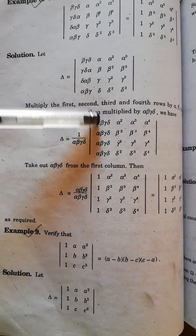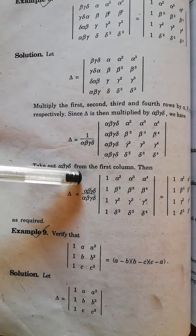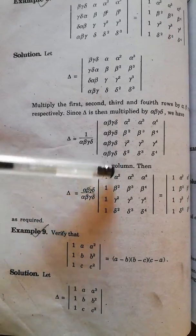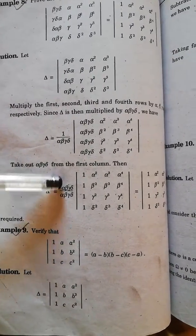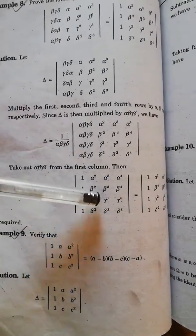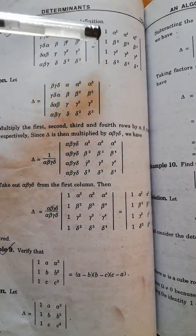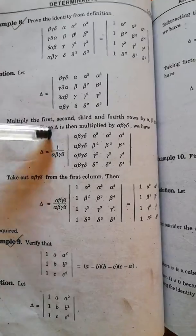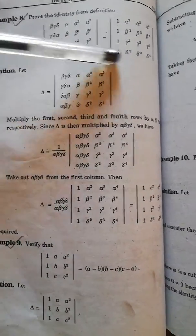Then you can see here in the first column, all the entries are common. We have to take it common. When you take it common, you get one, one, one, one. These two cancel out, and this is equal to the right hand side of that determinant. So by using the property, we have proved this identity.